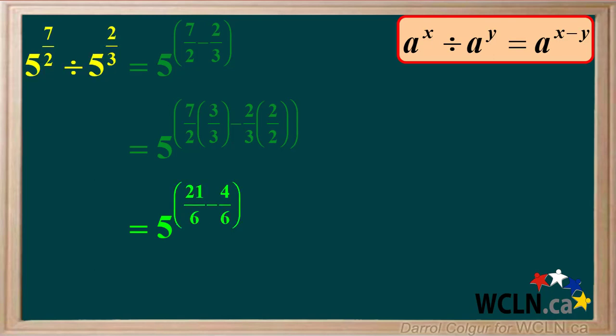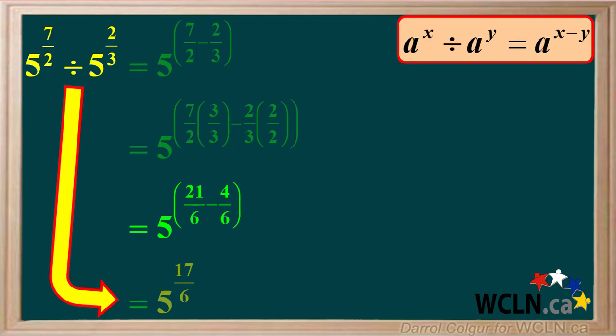So, 5 to the power of 7 over 2 divided by 5 to the power of 2 thirds is equal to 5 to the power of 17 over 6. We can leave the answer in this form.